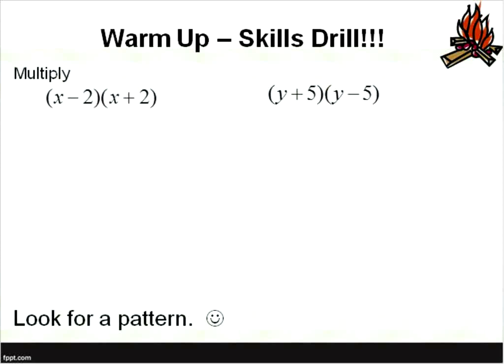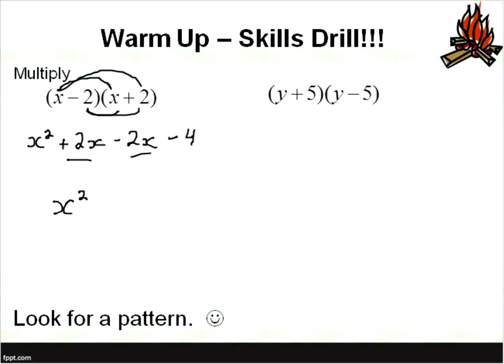You can use the FOIL method or the distributive property method. You take the first term times everything inside the second one. X times X is X squared, X times 2 is 2X. Then you take the second term and multiply that times everything inside the second set of parentheses. Negative 2X times X gives you negative 2X, negative 2 times positive 2 gives you negative 4. Then we join together like terms: plus 2X minus 2X — they cancel — leaving us with X squared minus 4.